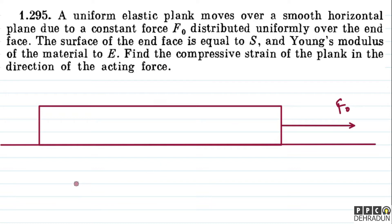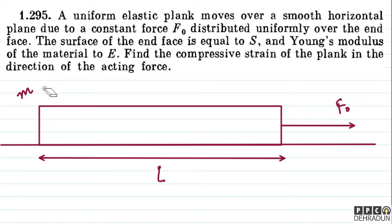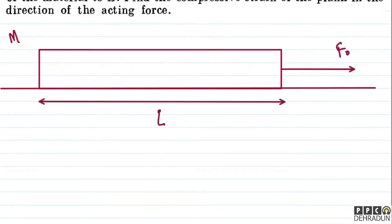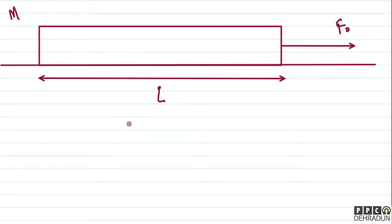Here we consider a small element of the plank. The plank's initial length is L and its mass is M. If we talk about the acceleration, it is very easy to find — acceleration equals force upon mass, i.e., F0 upon M in the horizontal direction.